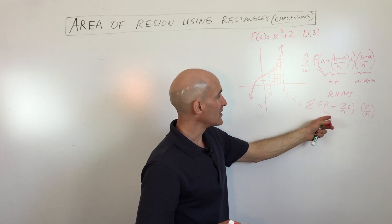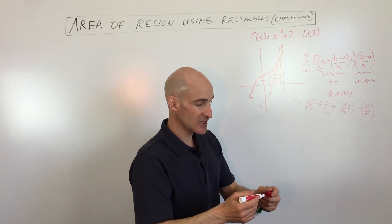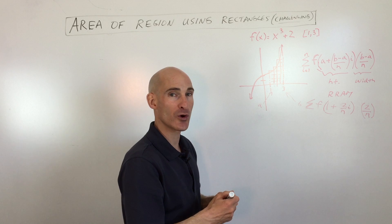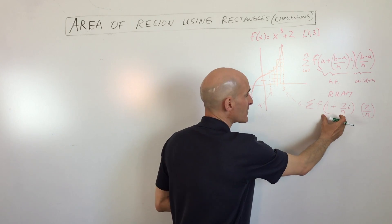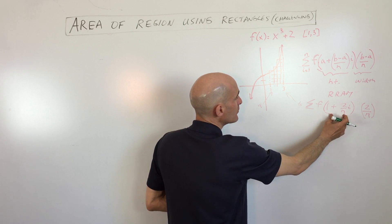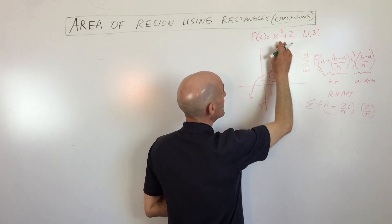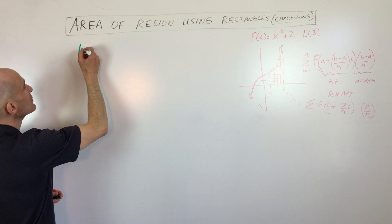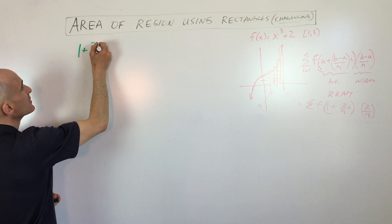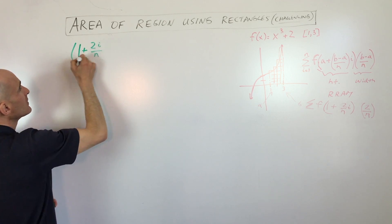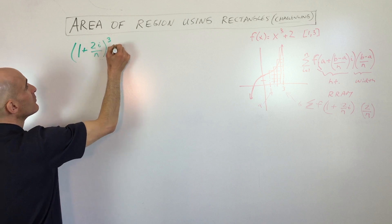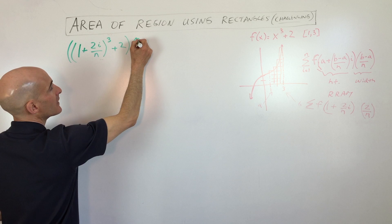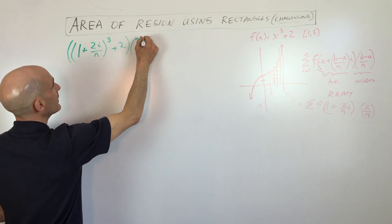Let's go ahead and keep proceeding with this example. It's a little bit more challenging in terms of arithmetic, but I want to show you how it works because students sometimes get tripped up on the details. We're going to put one plus two over N times i in for x. So this is going to be one plus two-i over N, all cubed, plus two, and that's all multiplied by two over N.